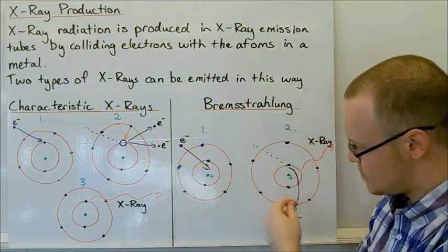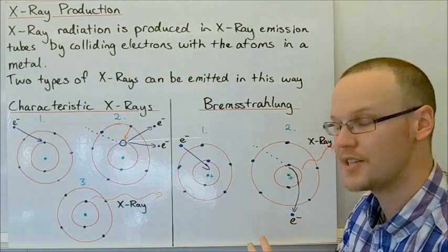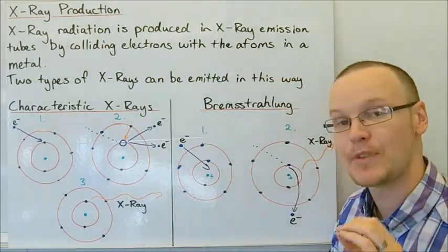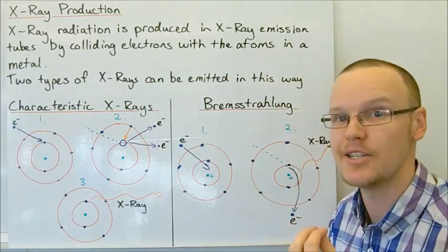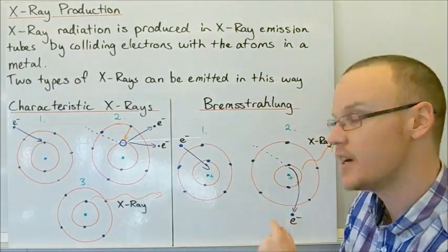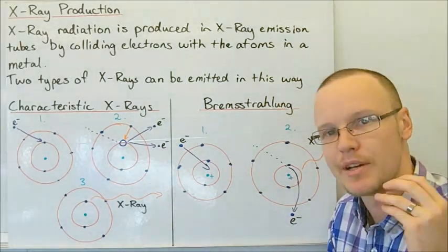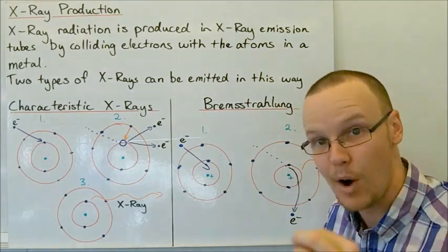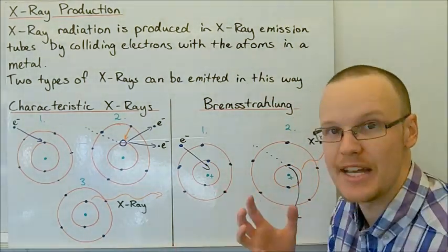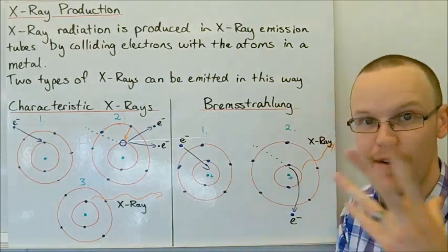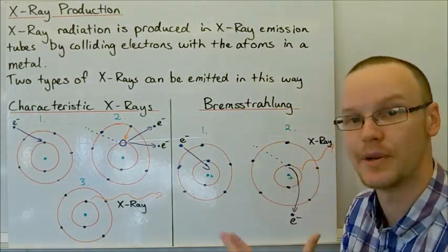The electron slows down and curves around the nucleus. During this, it's being accelerated — it might not change its speed, but its velocity changes because its direction is being changed. Because its velocity is changing, it's being accelerated by the positive charge. If the electron does slow down and its kinetic energy changes, that energy can't just evaporate — the leftover energy from slowing it down is converted to an X-ray.